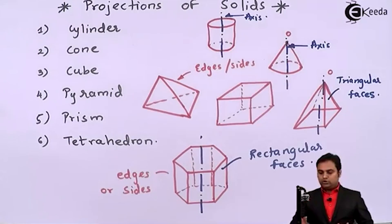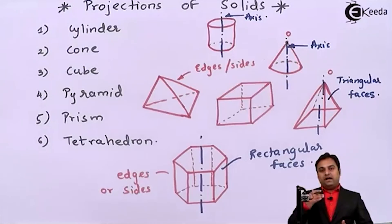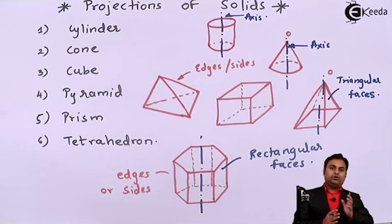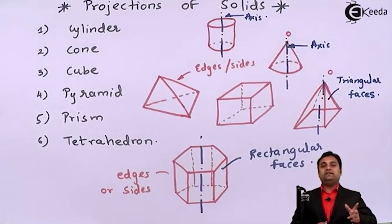It means the solid will not be stable like this. In the initial condition the solid will be resting. After that depending on the question we have to make it inclined. And when it is inclined how it will look like from the front view and from the top view, that we are going to draw in case of projection of solids.